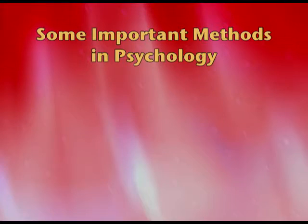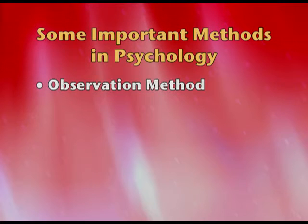Now we have the major topic of the chapter: some important methods in psychology. These are methods not just exclusive to psychology; we also have methods unique to psychology. First, we have the observational method. If we talk about general observation, you are observing me — but how is this observation different from a scientific observation? For example, if I am sitting and observing two children playing, how is that different from scientific observation?